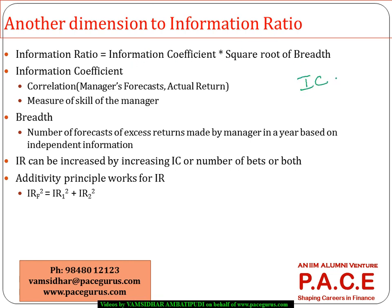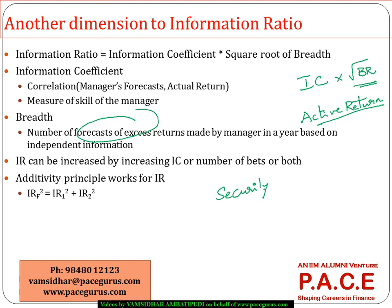The information ratio is defined as the information coefficient times the square root of the breadth of information. Breadth deals with the number of forecasts of active return the manager is typically making on securities. This is primarily from the perspective of the security assessment or security selector person, as opposed to a market timer who bets on the market going up or down.